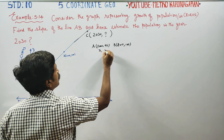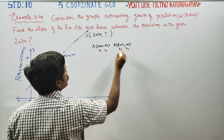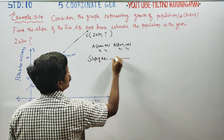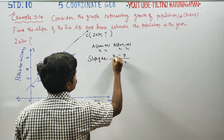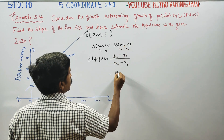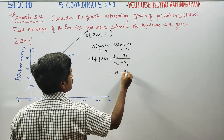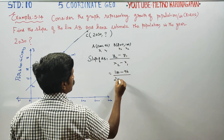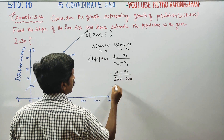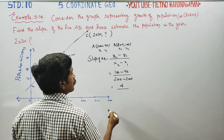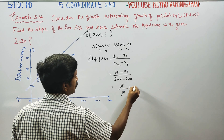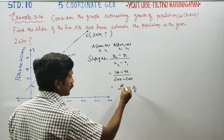Using the slope formula: slope of AB = (y2 − y1) / (x2 − x1). So that is (100 − 96) / (2015 − 2005) = 4 / 10, which simplifies to 2 by 5.